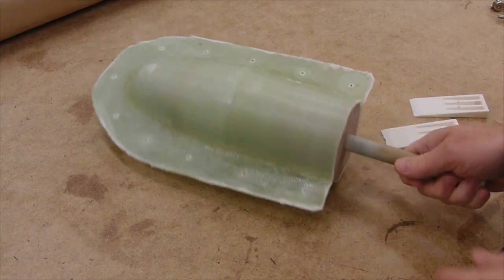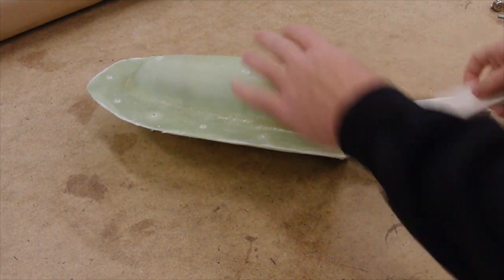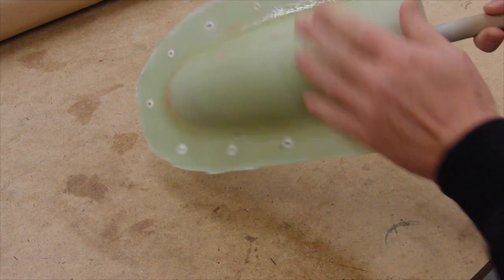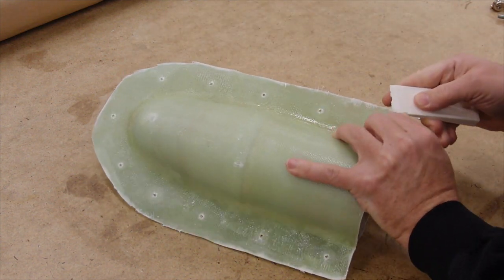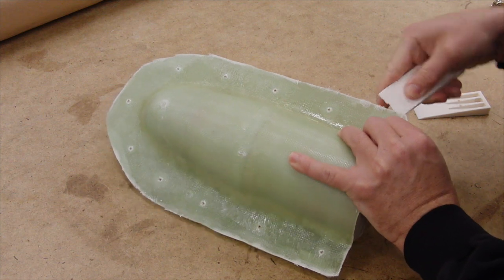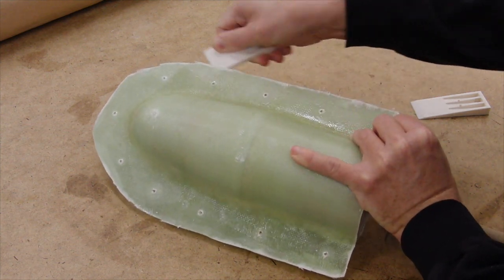And finally, we're ready to take the plug out of the mold. It may come out by hand or you might need to use little wedges. I have these little plastic wedges that I can work in around the edge.